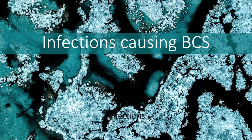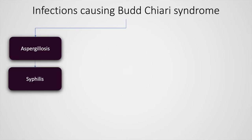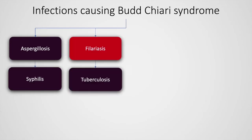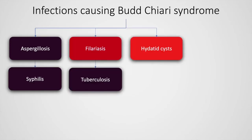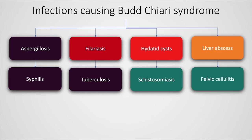Infections causing Budd-Chiari syndrome include aspergillosis, syphilis, filariasis, tuberculosis, hydatid cysts, schistosomiasis, liver abscess, and pelvic cellulitis.